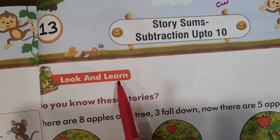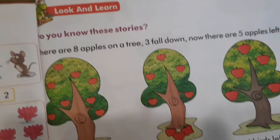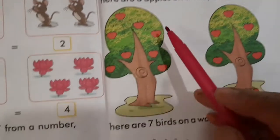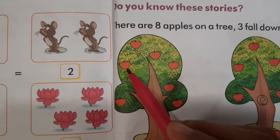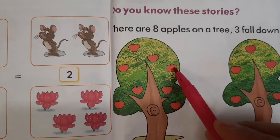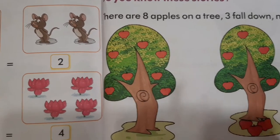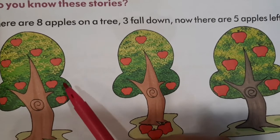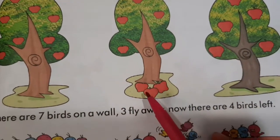Look and learn. Do you know these stories? Aapko yeh sums ki stories pata hai. Chalou dhekhte hai. There are 8 apples on a tree. Yeh jho peed hai, tree hai — wahaan peh kitnay apples hai? Eight. And three fall down. Jho apples eight hai, us meh se kitnay gir jate hai? Three. Three fall down. Peed meh se teen apples gir gai.